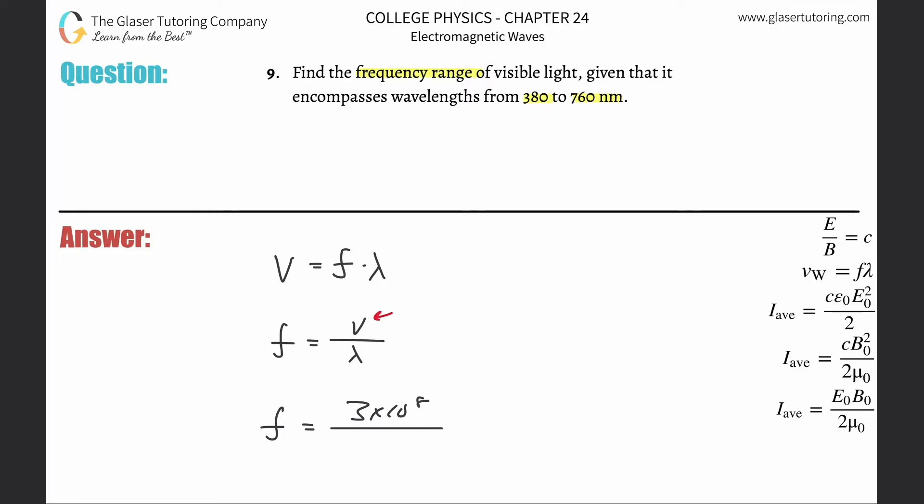And that is going to be, do one of them first, 380. They said nanometers but we need meters, so take that and multiply it by 10 to the minus ninth. That's one calculation. And then the other would be the same thing, just plugging in the other wavelength, 760 times 10 to the minus ninth.